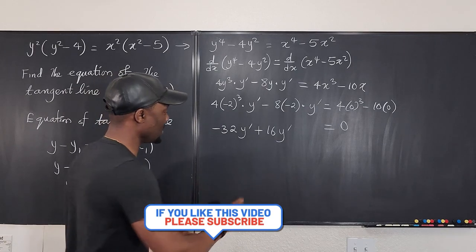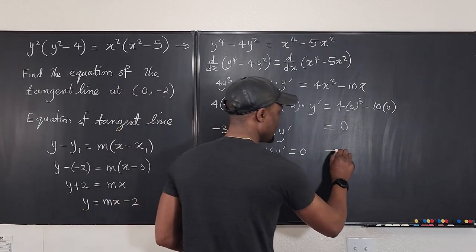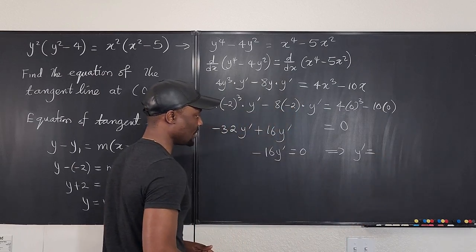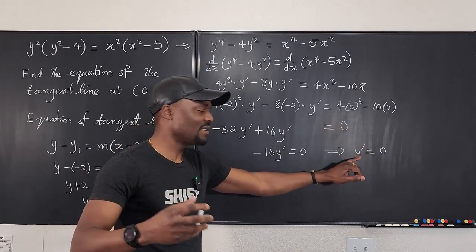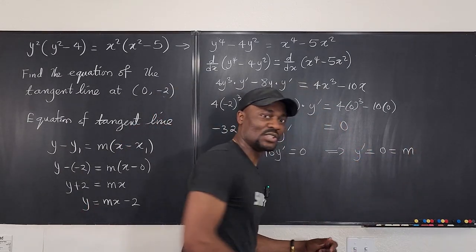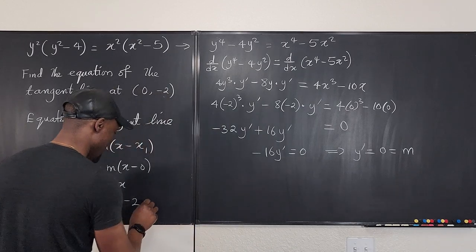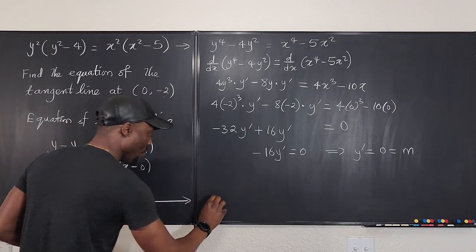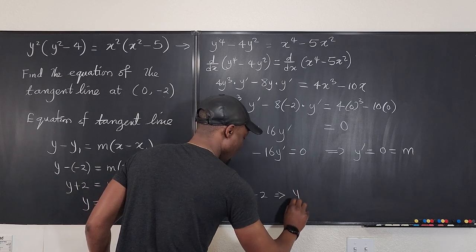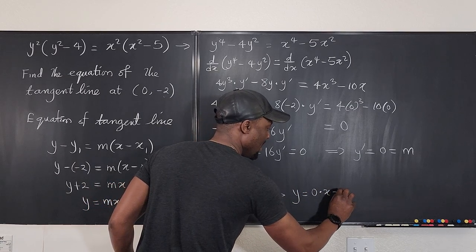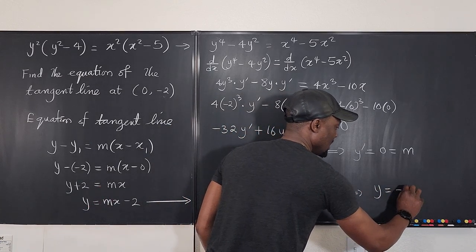So what would this give us? This gives us negative 16 y prime equals 0 which means that y prime equals 0. No way you see y prime equals 0. What did we say y prime again? It was m. That's the slope we've been looking for. So the slope of our function is 0 actually. So it means if we rewrite this expression here our y equals mx minus 2 is the same thing as y equals 0 times x minus 2. Well this becomes 0 and your answer is y equals negative 2.